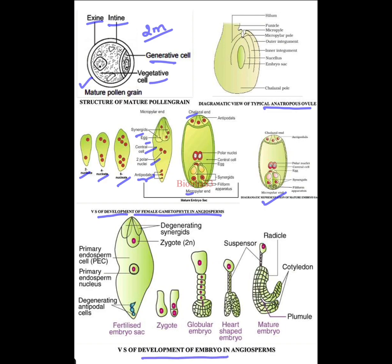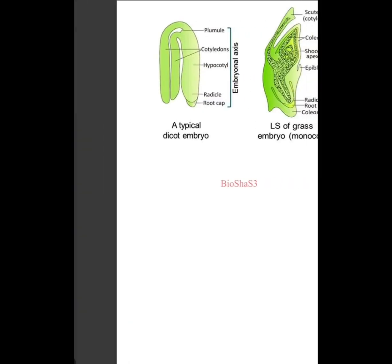The stages of development of the embryo: you have to remember how after fertilization the embryo sac develops into a mature embryo. This goes from zygote, then globular embryo, heart-shaped embryo, and then the mature embryo. The mature embryo will have a radicle which gives rise to roots, and cotyledons — you can see two cotyledons since it is a dicot — and the plumule which gives rise to the shoot system.